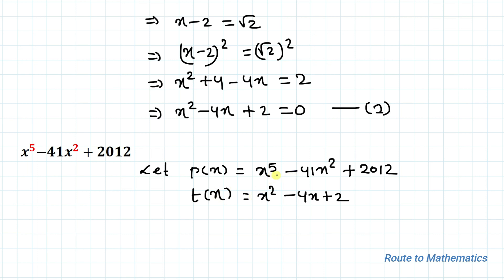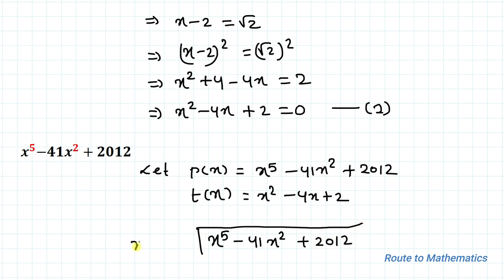In the next step let's divide p(x) by t(x). So we have x⁵ - 41x² + 2012 divided by x² - 4x + 2.